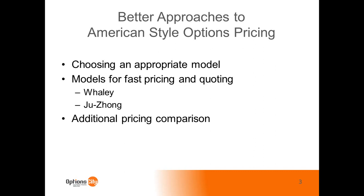So I'll get started. What we're going to talk about is a couple of different models that we have implemented and why we would choose those. As a quick overview, we'll talk about the decision process behind choosing a model, and then the two models we recommend for fast pricing and quoting — namely the Whaley model and the Xu Zhang model — and show a pricing comparison after the overview.